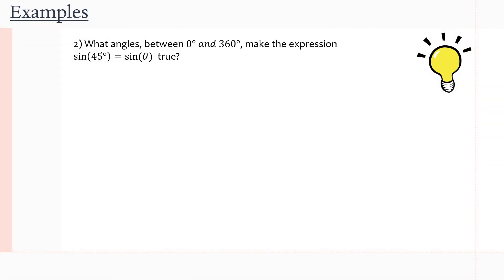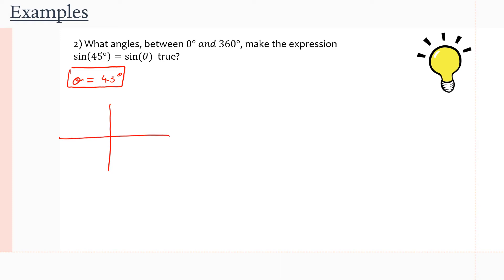Let's move on to question two. It says: what angles between 0° and 360° make the expression sin(45°) = sin(θ) true? The question is asking us to find θ. Obviously the first one is θ = 45°. Now we need to draw our Cartesian plane. We can take sine of 45° as our related acute angle and find in which quadrant this gives a positive sine for the principal angle.